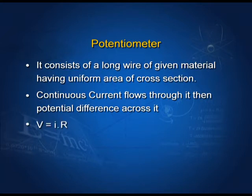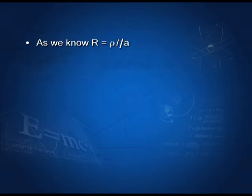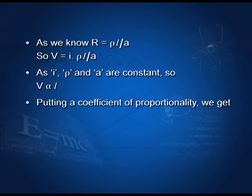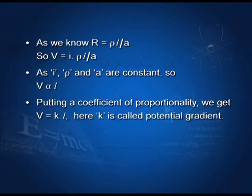Here R is the resistance offered by the total length of the wire. As we know, R = ρL/A. So we get V = IρL/A. Since I, ρ, and A (the area of cross section) are constant, we can say V is directly proportional to L, the length of the wire. Putting in the coefficient of proportionality, we get V = K·L.